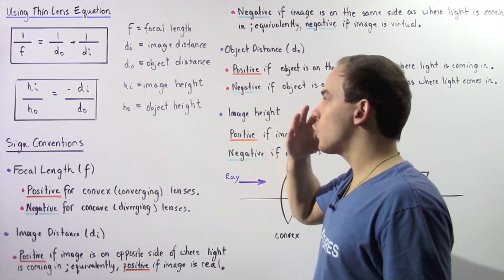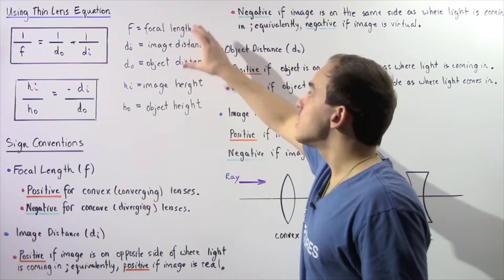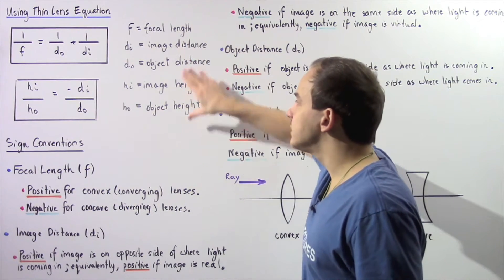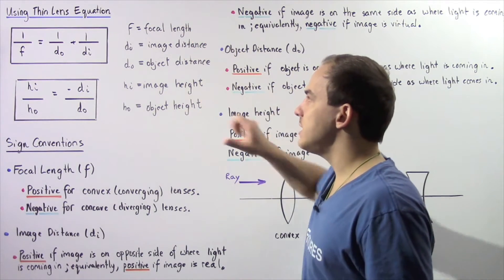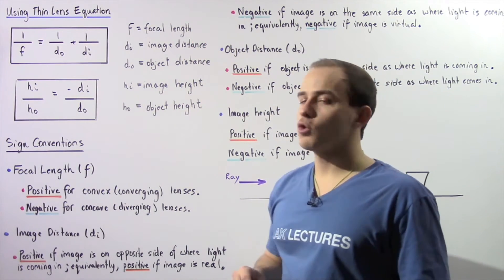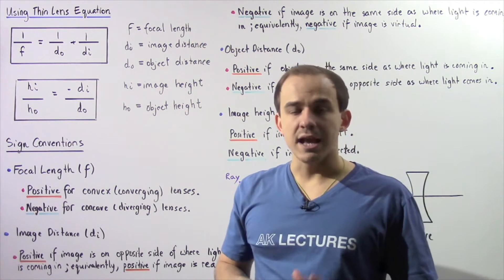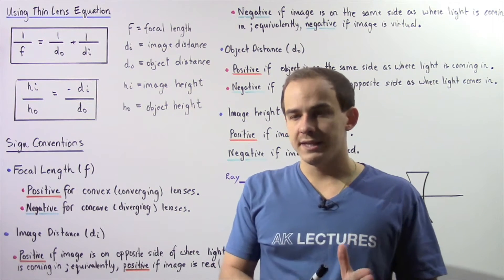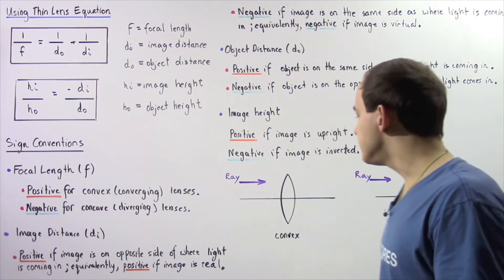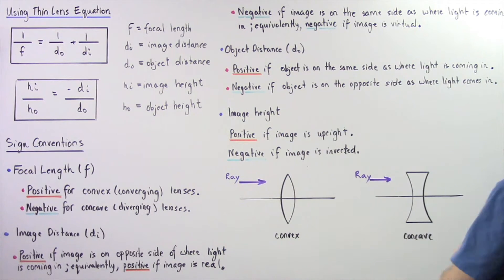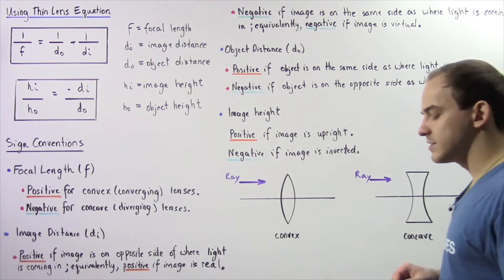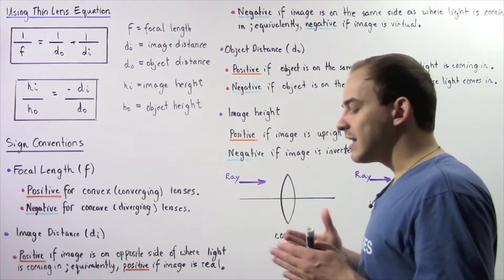So in this lecture, we're going to discuss the sign conventions for these five quantities. Before we begin, let's examine the two types of lenses, starting with the convex lens.